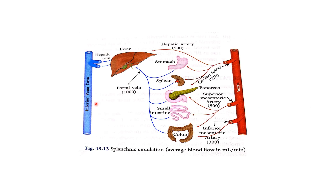Looking at the picture: the hepatic veins drain into the inferior vena cava from the liver. The portal vein receives blood from the stomach, spleen, pancreas, small intestine and colon. The celiac artery gives 700 ml per minute, superior mesenteric 1500 ml per minute and inferior mesenteric 300 ml per minute, totaling about 1500 ml per minute.